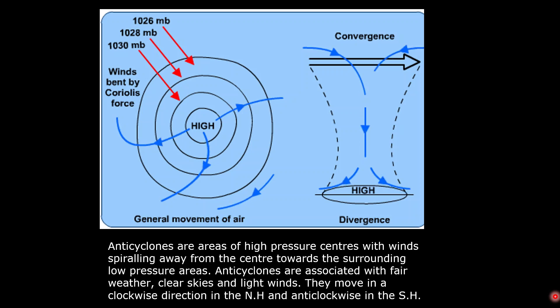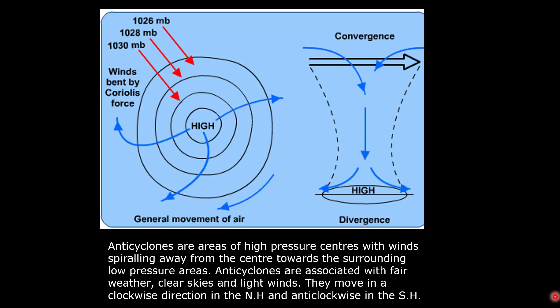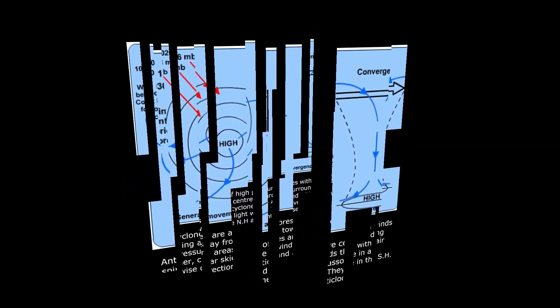This is in contrast to cyclones, which move in an anti-clockwise direction in the northern hemisphere and in a clockwise direction in the southern hemisphere. Today we have learnt the different factors which affect the climate of Asia. In the next module, I will explain two very important features of climate — the winter season and the summer season across the entire continent of Asia. Thank you.